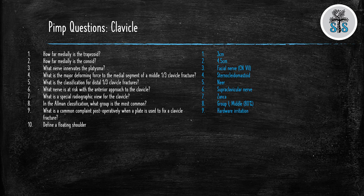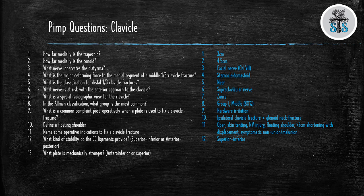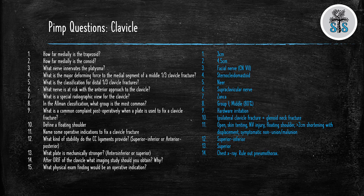What is a common complaint postoperatively when a plate is used to fix a clavicle fracture? Hardware irritation. Define a floating shoulder. Ipsilateral clavicle fracture plus a glenoid neck fracture. Name some operative indications to fix a clavicle fracture: open, skin-tenting, neurovascular injury, floating shoulder, greater than 2 centimeters of displacement, symptomatic nonunion or malunions. What kind of stability do the CC ligaments provide? Superior and inferior. What plate is mechanically stronger — anteroinferior or superior? Superior. After ORIF of the clavicle, what imaging study should you obtain and why? Chest x-ray to help rule out a pneumothorax. What physical exam finding would be an operative indication? Open fracture or skin-tenting.